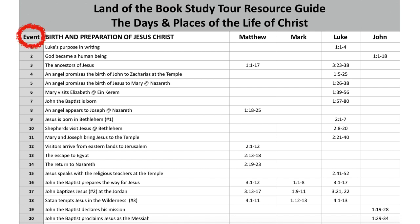On the chart, down the left column are the events. There are over 250 events in the life of Christ. Basically, the four Gospels are 89 chapters and they record 256 events that occur in the life of Christ. Then these are categorized by major events. The birth and preparation of Jesus Christ is this opening part. Then you see the four Gospels in parallel columns — Matthew, Mark, Luke, and John.